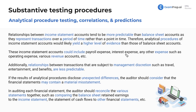Income statement accounts that work well for analytical procedures include payroll expense and interest expense, which should be fairly consistent. The more employees you hire, the higher the payroll expense — you can tie that to something and see the trends. You can see ratios like for every two employees hired, there's a corresponding increase in payroll expense. However, relationships involving transactions subject to management discretion, such as travel, entertainment, and benefits, are less predictable because there is a human element in those decisions. If analytical procedures disclose unexpected differences, the auditor should consider that the financial statements may contain a material misstatement.